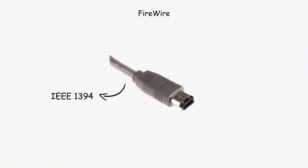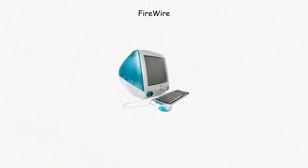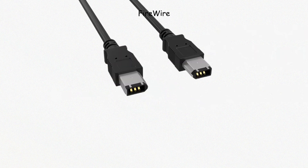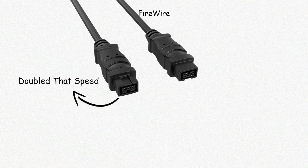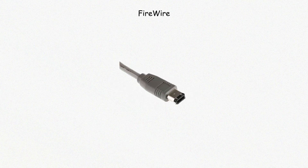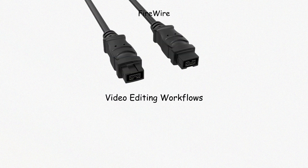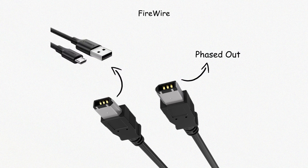FireWire, also known as IEEE 1394, was developed by Apple for high-speed data transfer. It appeared on many Macs and some PCs in the early 2000s. FireWire 400 supported 400 megabits per second, while FireWire 800 doubled that speed. It was used to connect camcorders, external drives, and audio interfaces. Unlike USB, FireWire allowed peer-to-peer data transfers without a computer acting as a host, making it popular for video editing workflows. FireWire has since been phased out and replaced by USB and Thunderbolt.